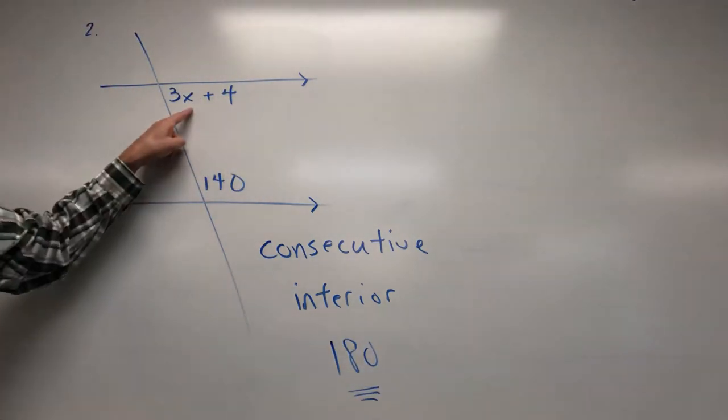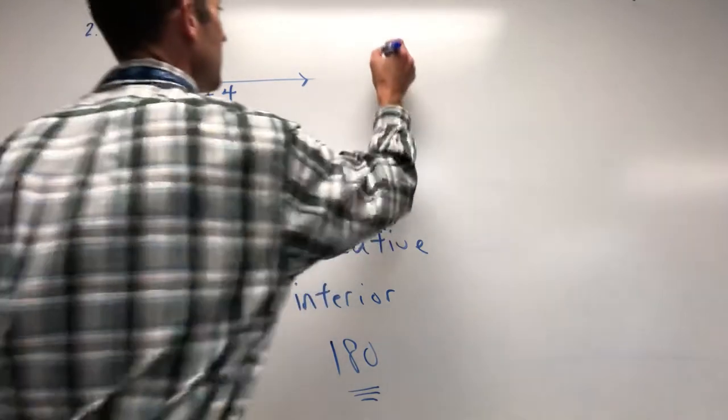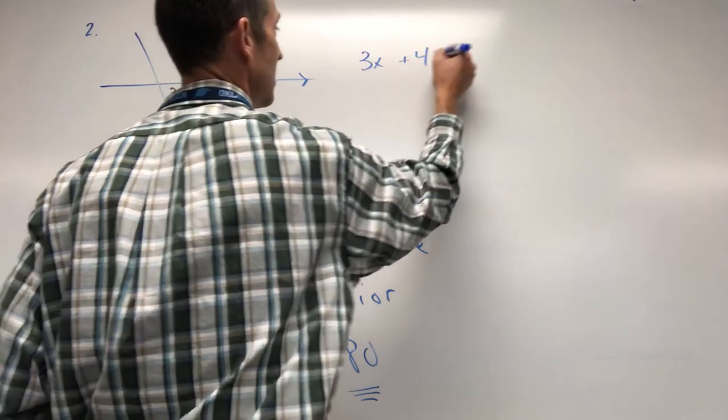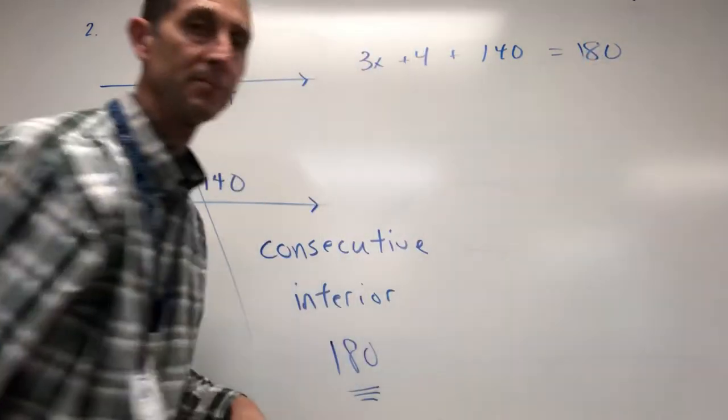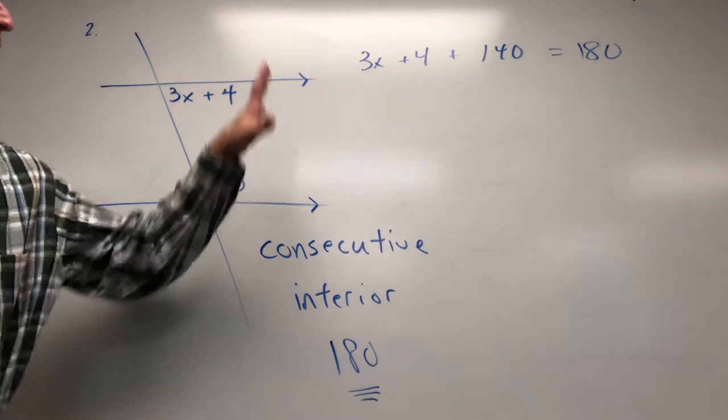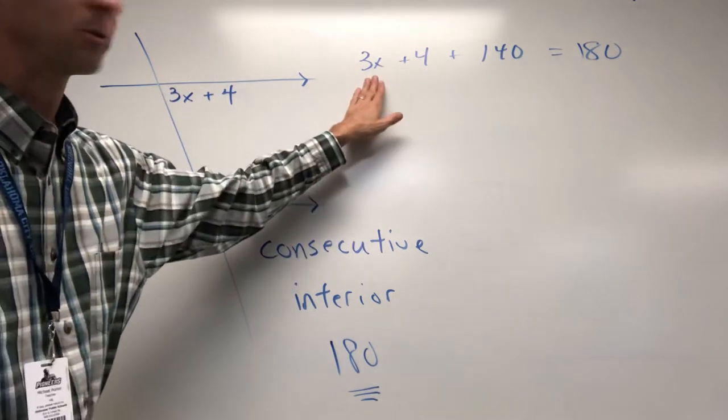So grab your 3x plus 4, grab your 140, and let's add those together, set up to 180. Okay, algebra time. Keep the 3x where he is.